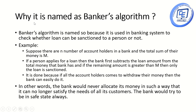We will see why it is called the Banker's Algorithm. It is called so because it is used in the banking system to check whether a loan can be sanctioned to a person or not. For example, suppose there are N account holders in a bank and the total sum of their money is M. If person X applies for a loan, the bank first subtracts the loan amount from its total money, and if the remaining amount is greater than M, then only the loan is sanctioned. This is done so that if all account holders come to withdraw their money, the bank can easily do it. In other words, the bank would never allocate its money in such a way that it can no longer satisfy the needs of all its customers. So the bank always tries to be in a safe state.